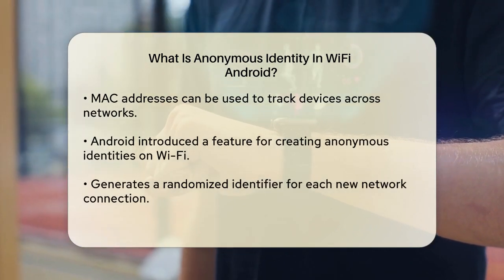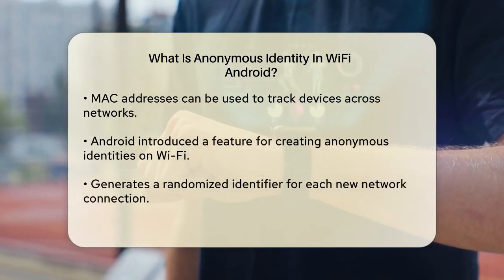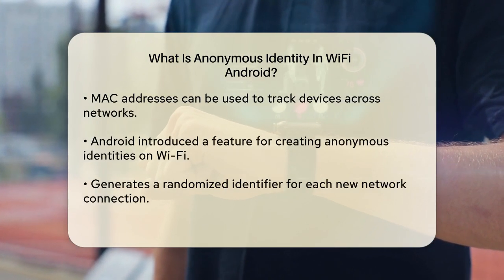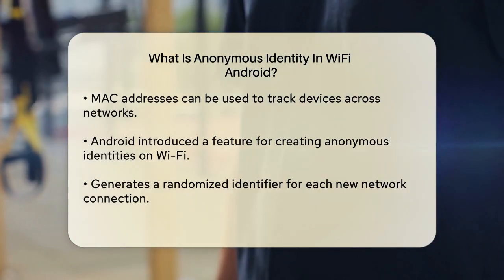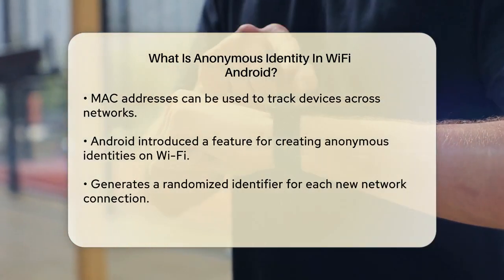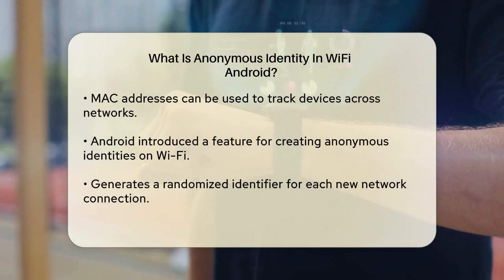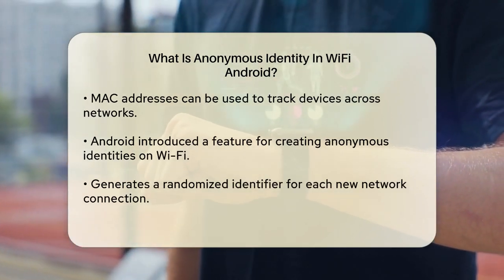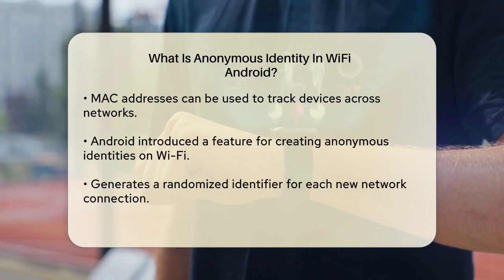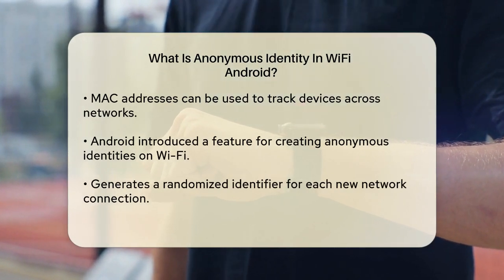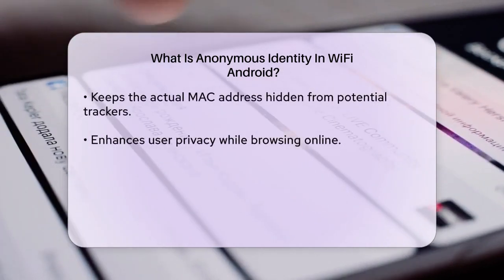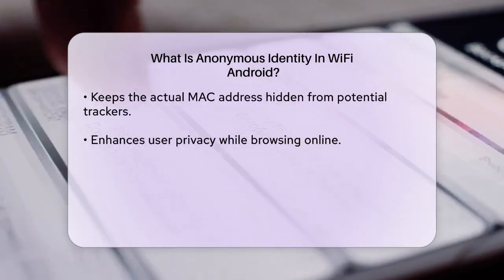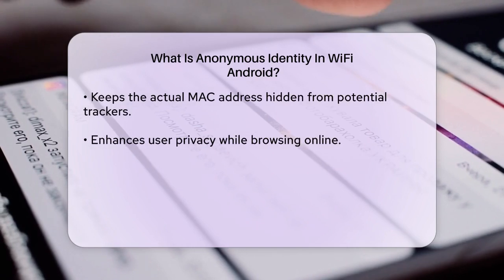To address this concern, Android introduced a feature that allows users to create an anonymous identity when connecting to Wi-Fi networks. This feature generates a randomized identifier for your device, which changes each time you connect to a new network. By using this anonymous identity, your actual media access control address remains hidden, making it more difficult for others to track your online activities.